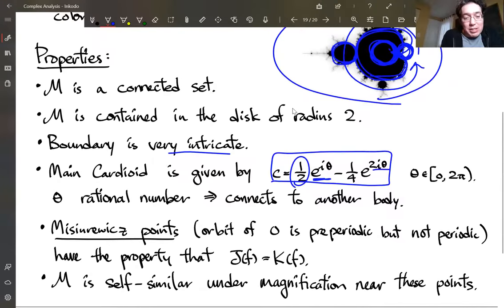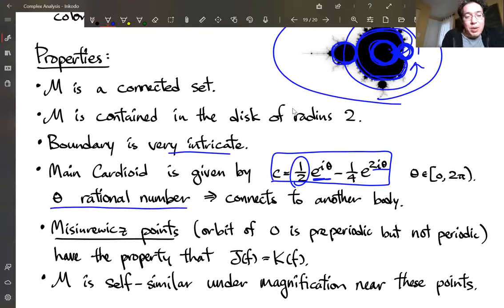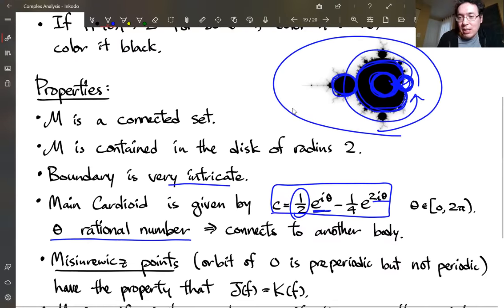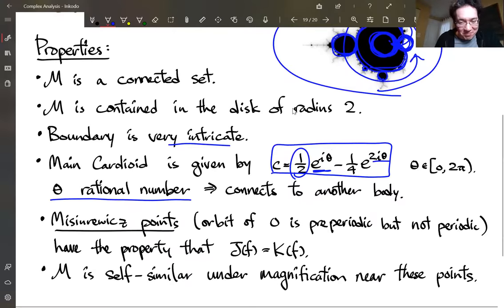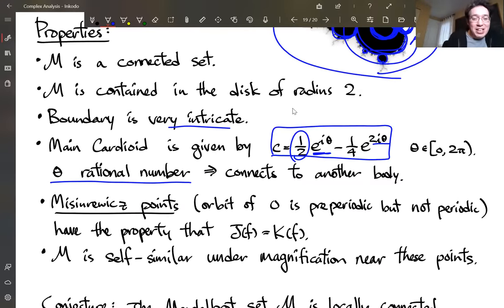This is an interesting fact. On the rational theta, as it goes around on this main cardioid, every rational number, there is a bulb that's attached to it, which is interesting. So there's infinitely many of these bulbs. And the larger the denominator of this rational number, the smaller it tends to be. So there's lots of bulbs attached to it.